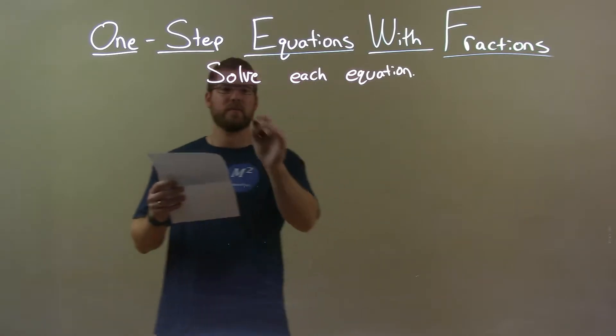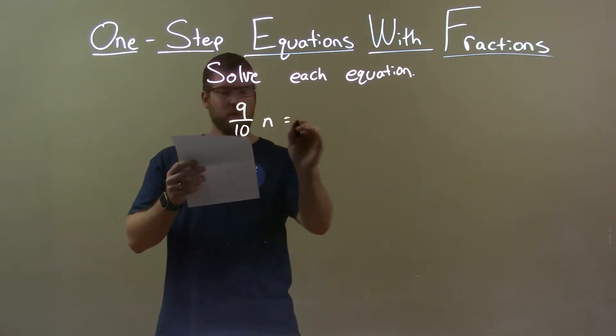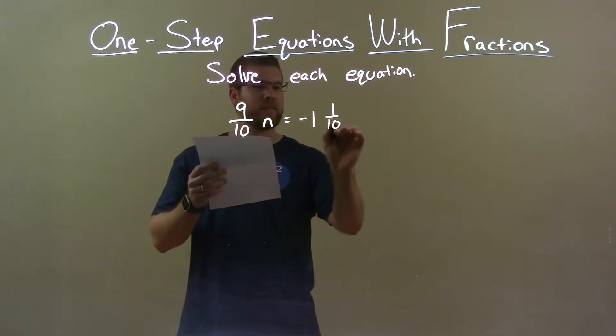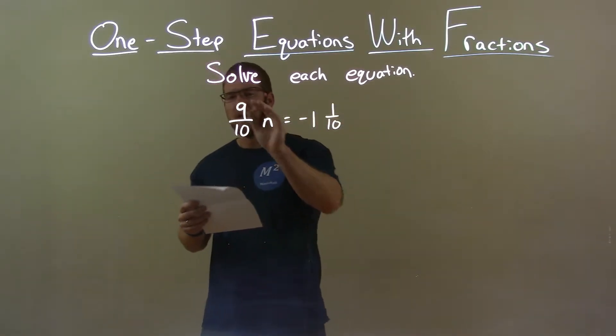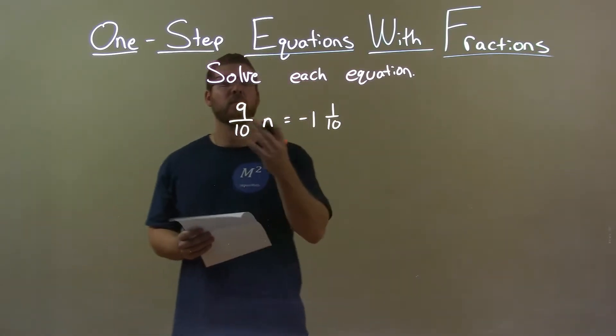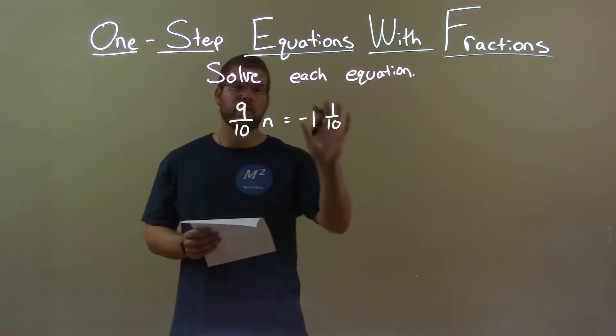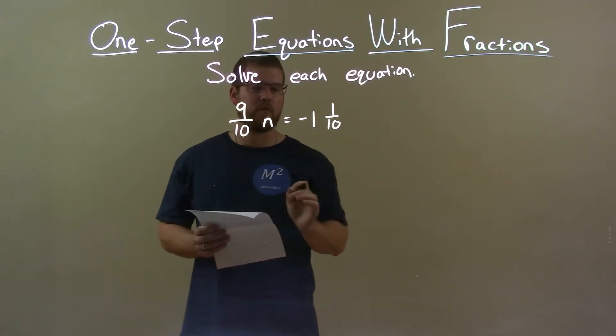If I was given this equation, 9 over 10n equals a negative 1 and 1 tenth. Well, I know we have 9 over 10 here and to get rid of that and have n by itself I'm going to multiply that by the reciprocal of both sides. But before I do that, I'm going to convert the right hand side as an improper fraction. I find that easier.